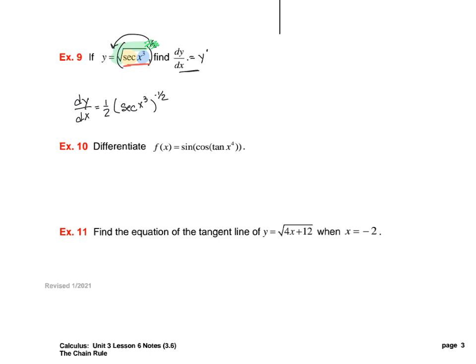The derivative of secant is secant tangent. Remember, inside my secant I have this x cubed, and so that's the part that's staying the same. That's the derivative of the next layer, and now we're done with the secant part. And now we're going to take the derivative of the x cubed, and the derivative of x cubed is 3x squared.